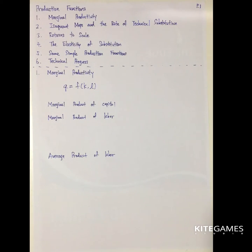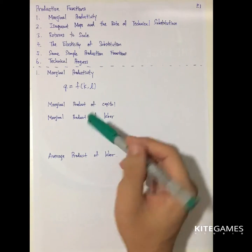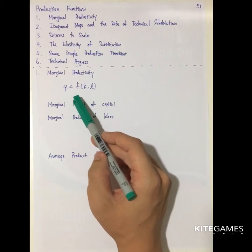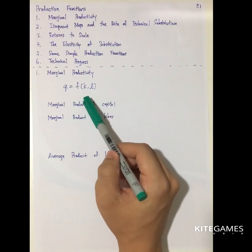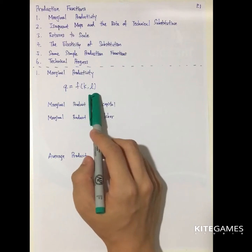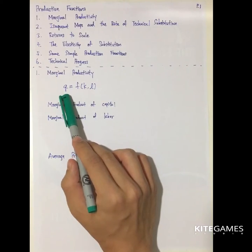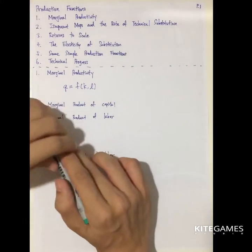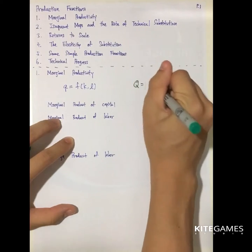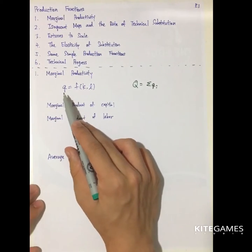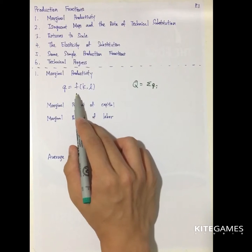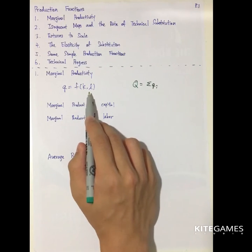First is the basic concept, the marginal productivity. So the marginal productivity means the increase in the output if we increase the number of inputs. This is how the usual microeconomic theory models the production function. Q is the individual firm's output. So if we add up all the Q, we will get a big Q. Big Q is the whole output, while small Q is the individual firm's output. This is a function of K and L — K is the capital, L is the labor.